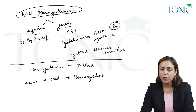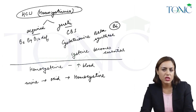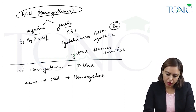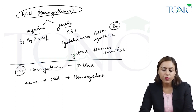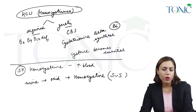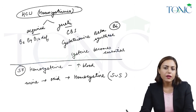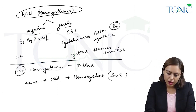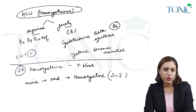Homocystine is made up of 2 molecules of homocysteine. In homocysteine there is a sulfhydryl group, while in homocystine there is a disulfide bond. In homocystinuria, the cyanide nitroprusside test is positive.